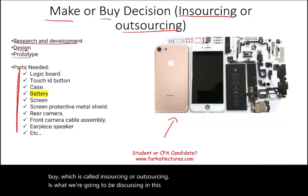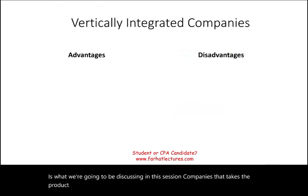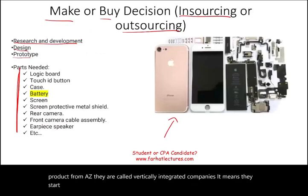Companies that take a product from A to Z are called vertically integrated companies. It means they start with research and design all the way through to the end.